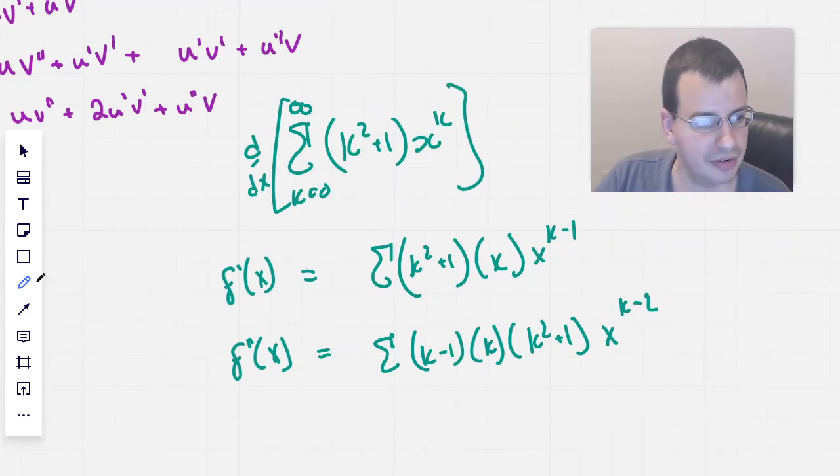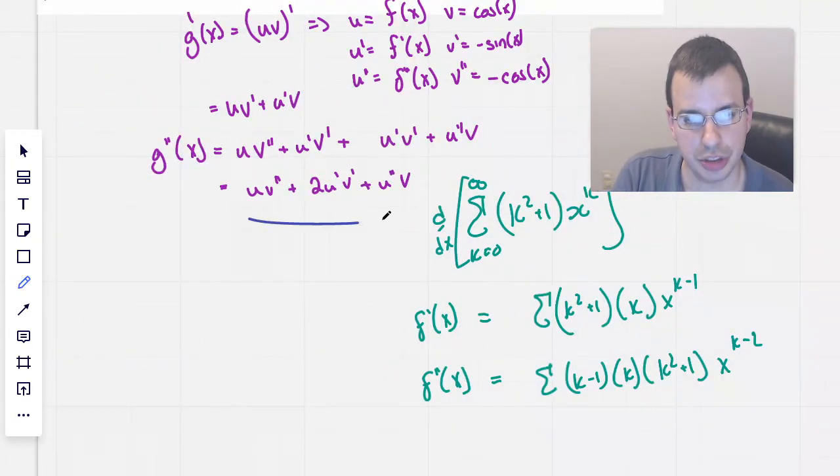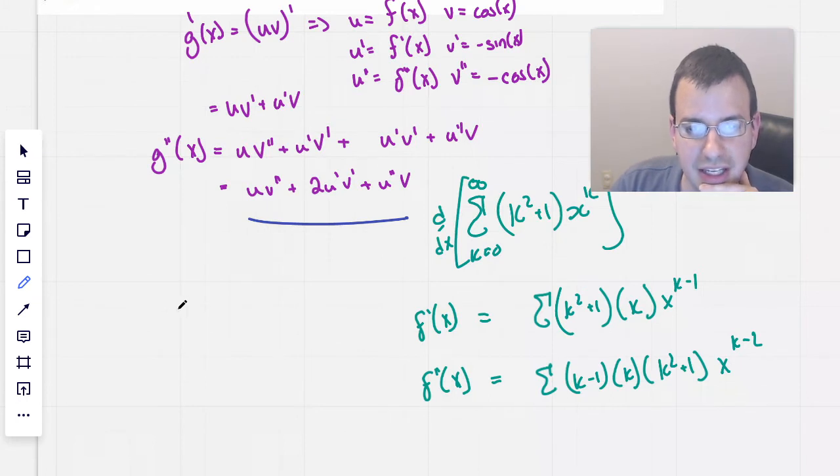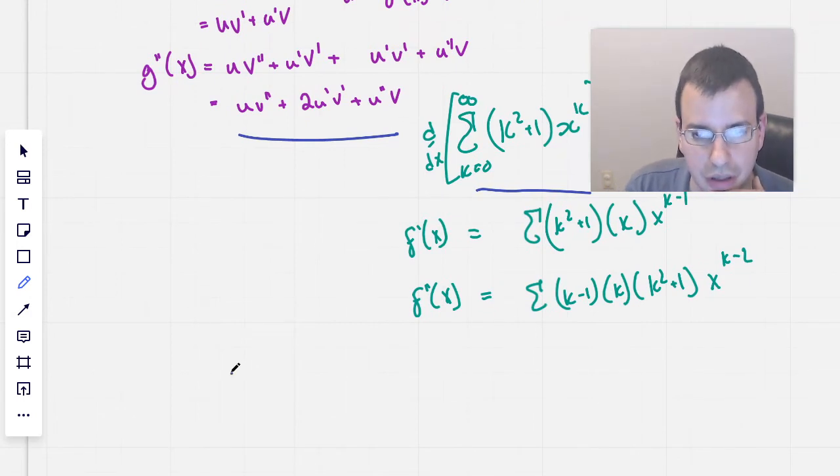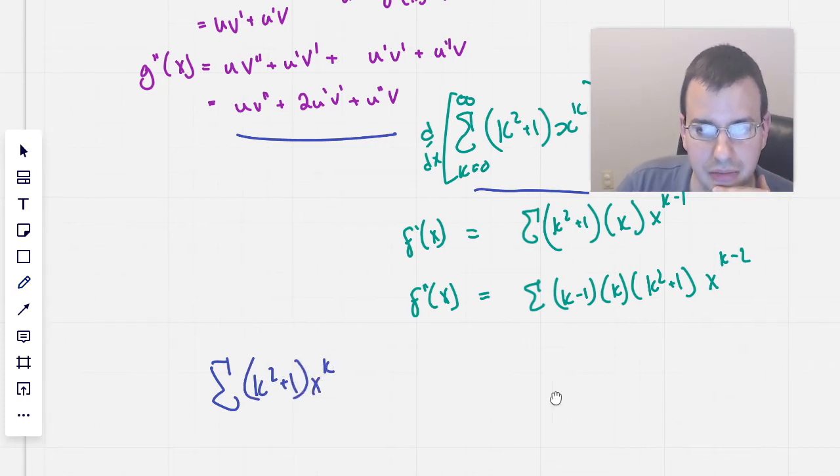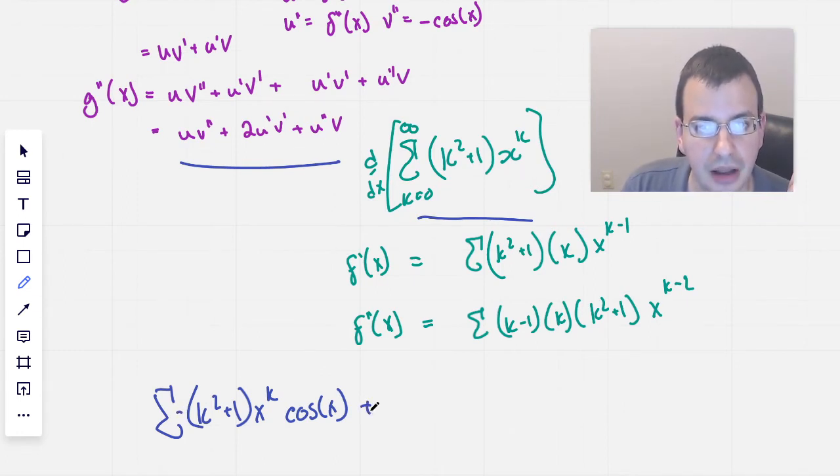So now I think we have everything we need. So now we have this equation is what we want to fill out. So u is f(x), which is this right there. So we have summation of (k² + 1) times x to the k times v double prime, which should be cosine of x. We'll do a negative.